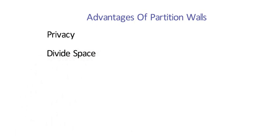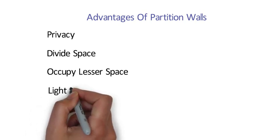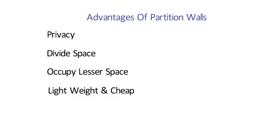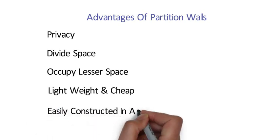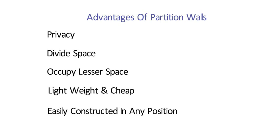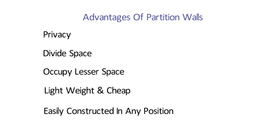Advantages of partition walls: Privacy — they provide privacy to residents from sight and sound. Divide space — they can divide a huge space into a number of rooms. Occupy lesser space — they can be constructed as slim and sleek as possible. Lightweight and cheap — partition walls are cheaper to construct compared to load bearing walls, lightweight and easy to construct, hence play a huge role in the economical aspect of building construction. Easily constructed in any position — partition walls can be easily constructed at any desirable position.